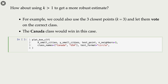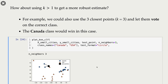Now let's try k equal to 3. In this case, we look at the three nearest neighbors of this black point. Our first neighbor is this red triangle, but the other two neighbors are these blue points, whose class is Canada. So we have one neighbor whose class is USA and two whose class is Canada. Taking a majority vote, the class of our query point is Canada.